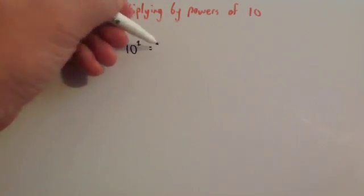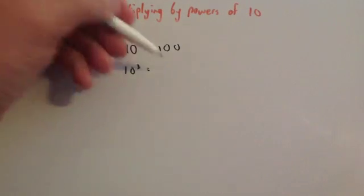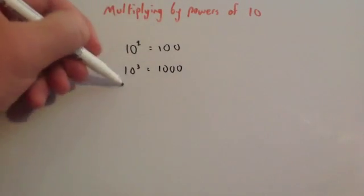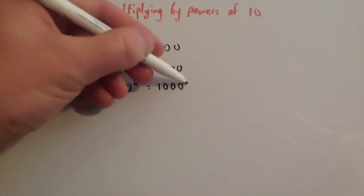Remember 10 squared is 10 times 10 which is 100. Or multiplying by 10 cubed which would be 10 times 10 times 10 which is 1,000. Or 10 to the power of 4 which would be 10 times 10 times 10 times 10 which would be 10,000 and so on.